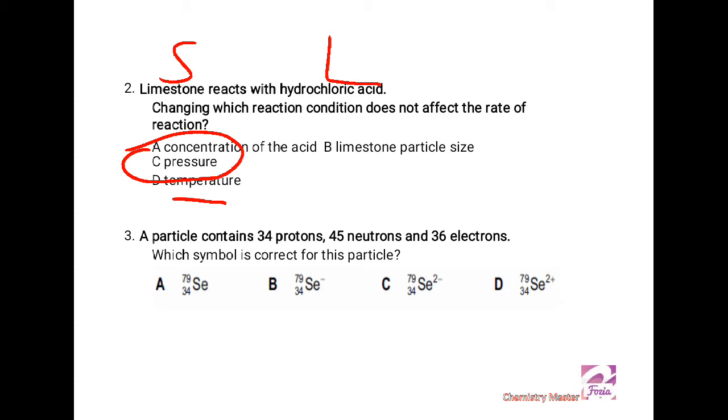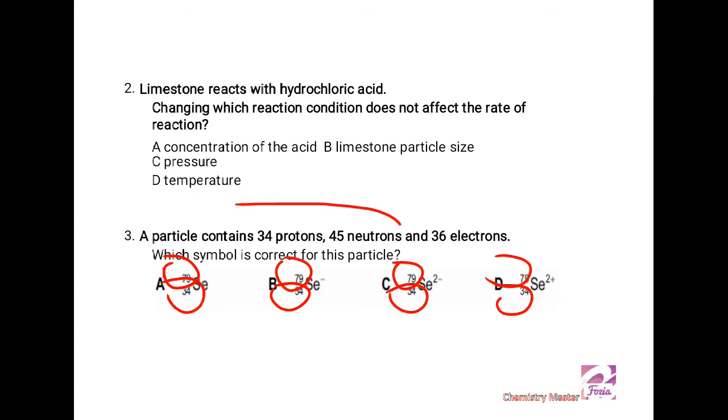The third MCQ is: a particle contains 34 protons, 45 neutrons, and 36 electrons. 34 protons means atomic number 34. 34 protons plus 45 neutrons gives us the mass number or nuclear number. All the options have the same atomic number, the lower subscript 34, and all the superscripts are the nuclear number. When we see the number of electrons, they are two more than the number of protons, so we have to see which representation has minus two sign on it. Yes, we got it.